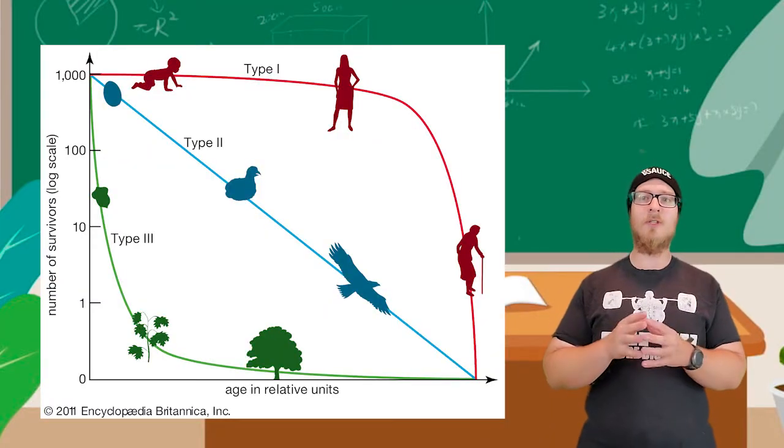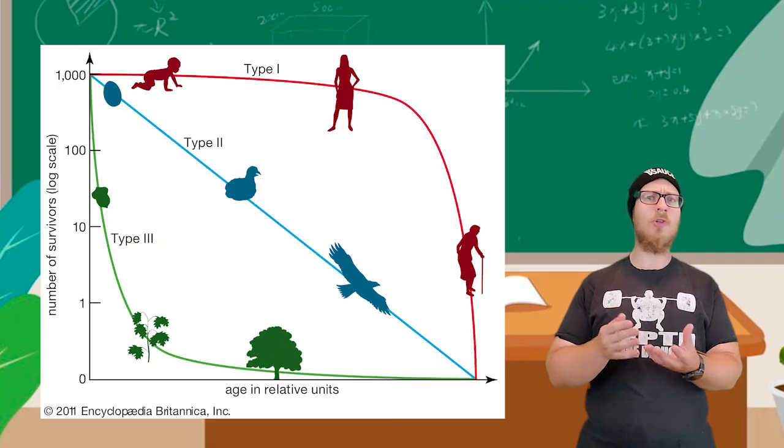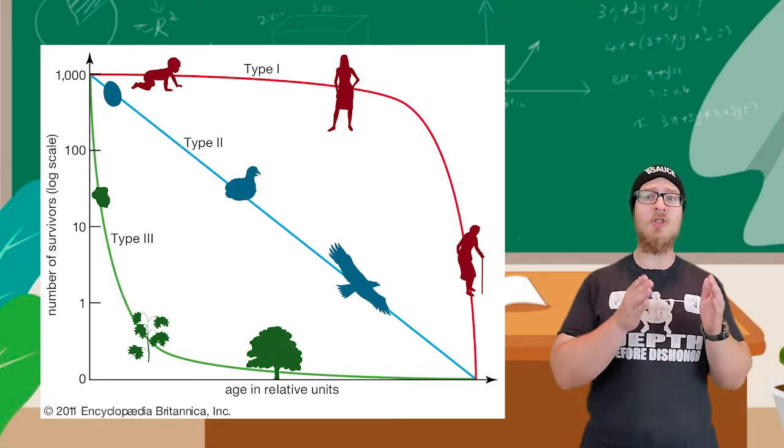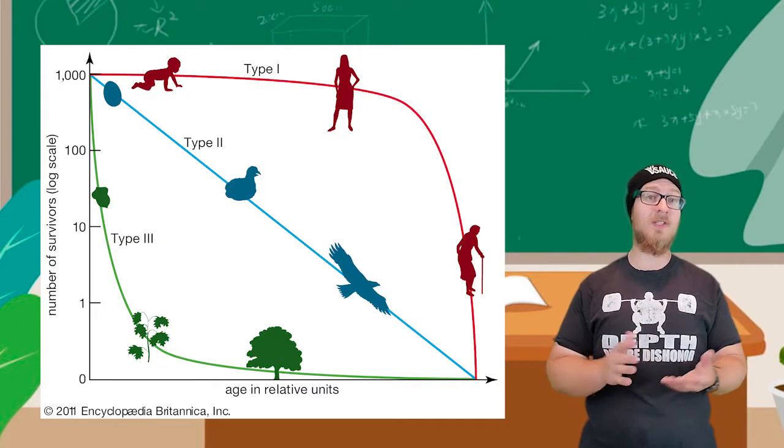Survivorship curves show the number or proportion of individuals surviving to each age group for a given species.